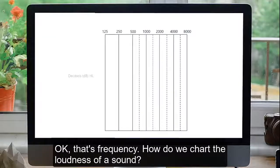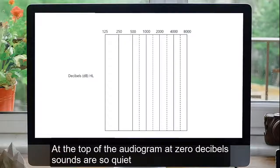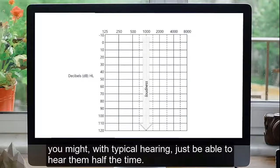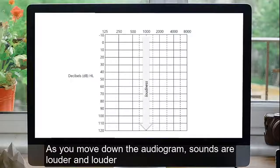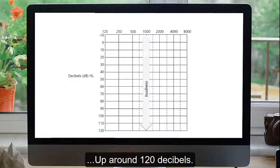How do we chart the loudness of a sound? Remember that loudness is measured in decibels, short form dB. At the top of the audiogram, at zero decibels, sounds are so quiet you might, with typical hearing, just be able to hear them half the time. As you move down the audiogram, sounds are louder and louder, until they are too loud for the human ear, up around 120 decibels.